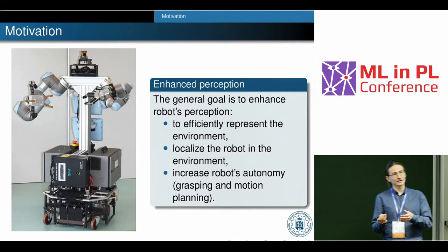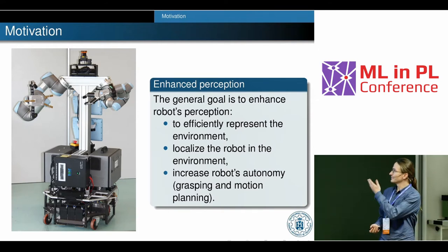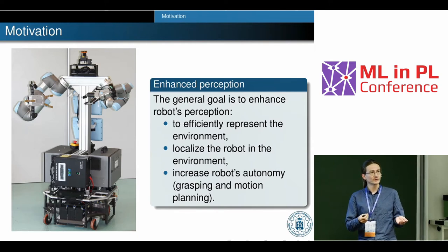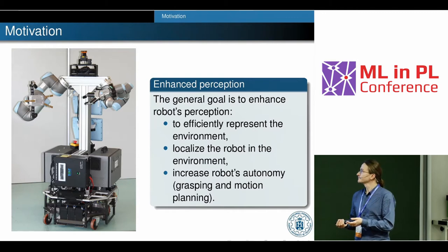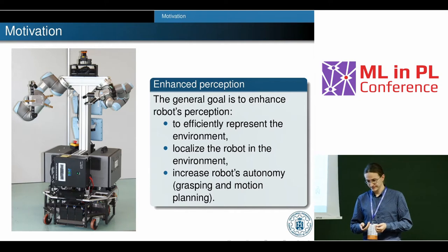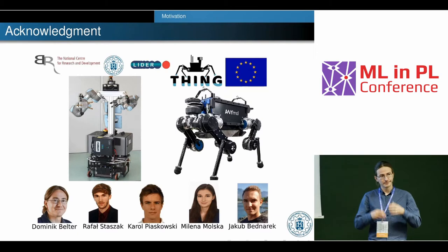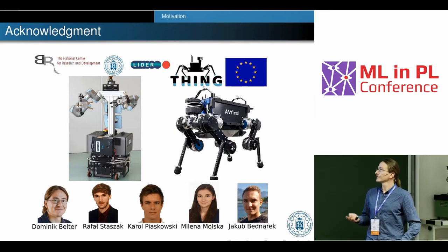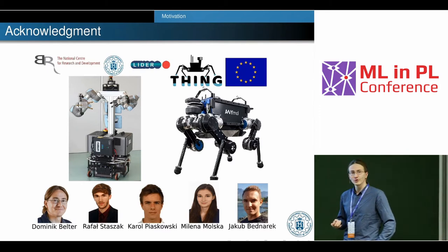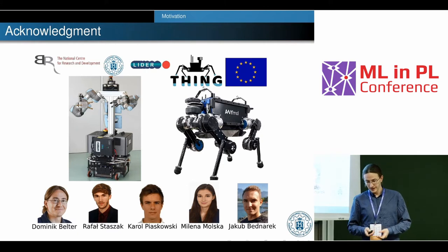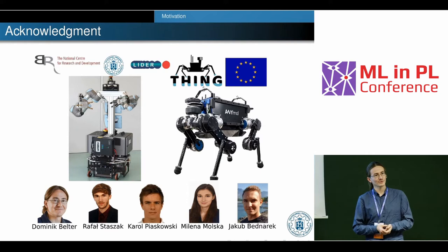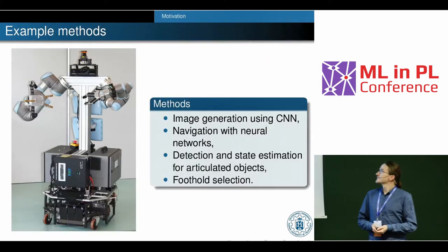We use these sensors to navigate and make the robot intelligent. We mainly work on topics like mapping — representing the environment and using that model efficiently to plan the robot's motion or to grasp objects. We also work on localization. This is the work of the whole group. We have two projects: the Leader project and an EU project with a quadruped robot working in a mine. Those people are also here and you can meet them during poster sessions.